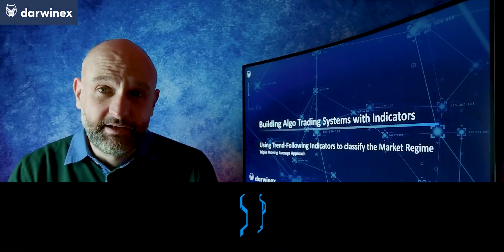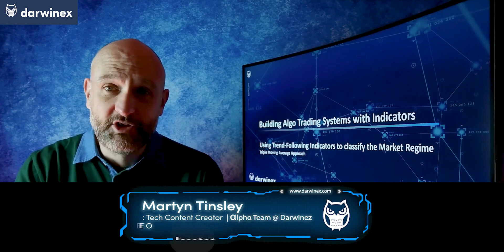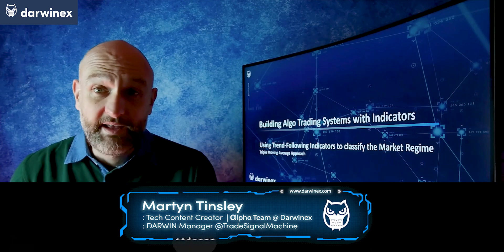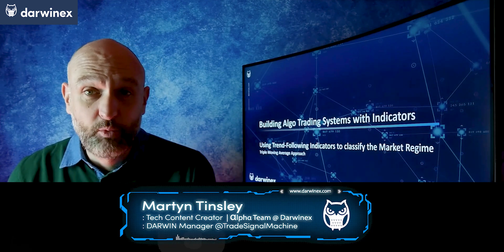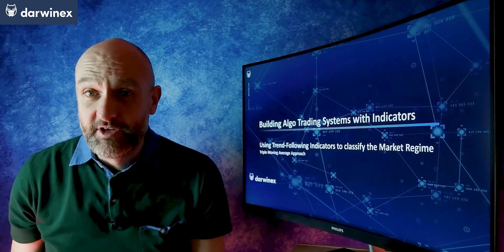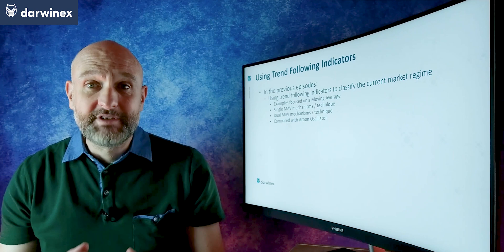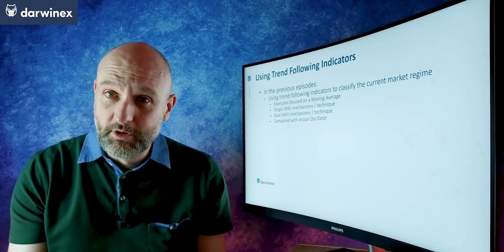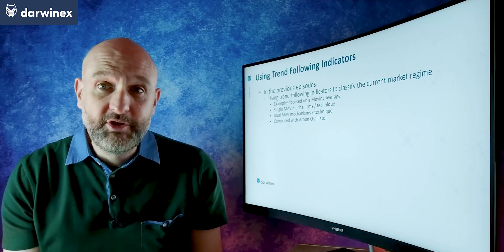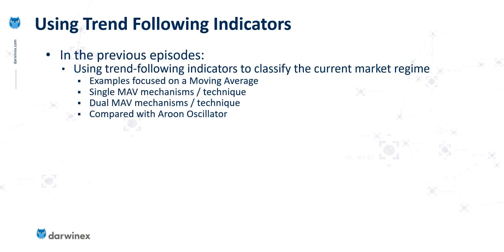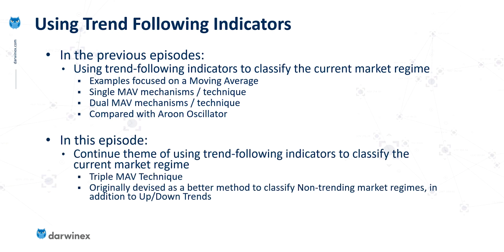If we can reliably categorize the market regime, the value of that cannot be underestimated, which is why it's worth looking at multiple ways of undertaking that process and putting the effort into the research required. So far we've looked at the single moving average approach, a dual moving average approach, and also one that used an oscillator called the Aroon indicator to do the same job. In this episode, we continue that theme by looking at a triple moving average technique.